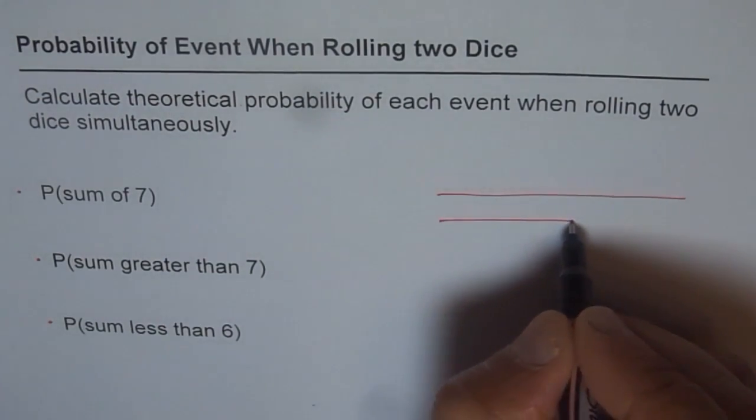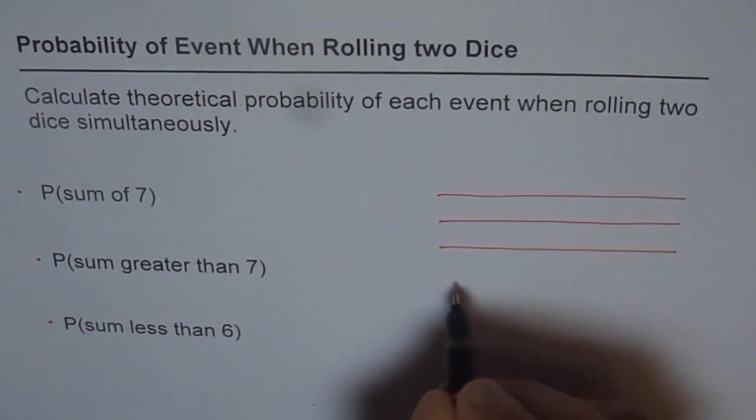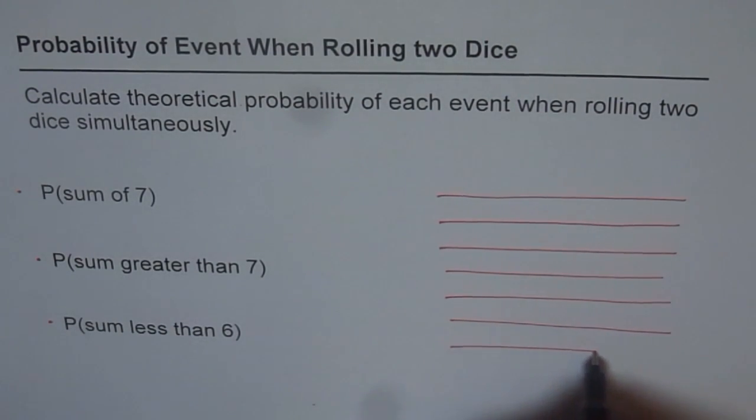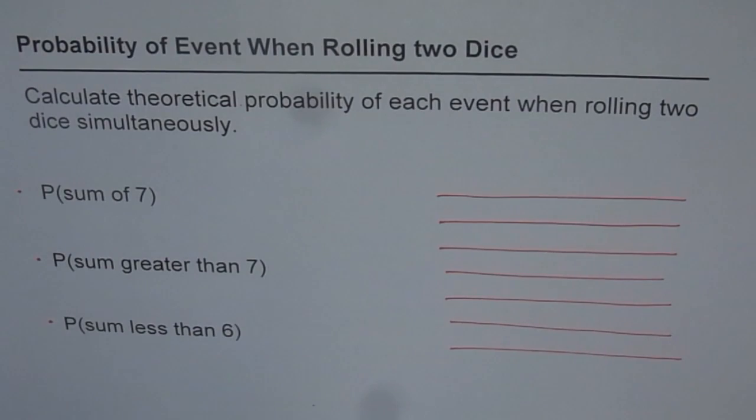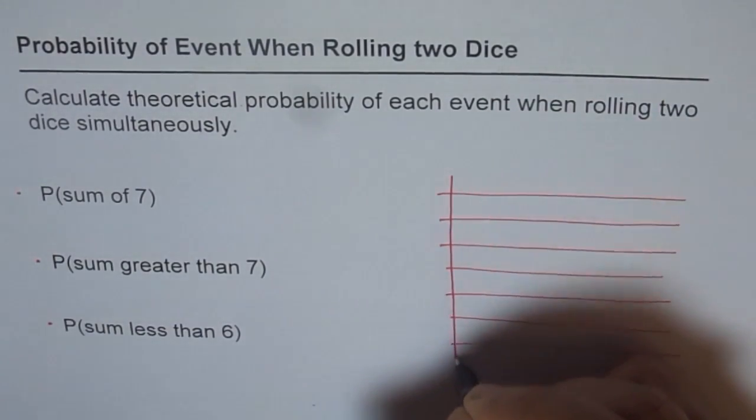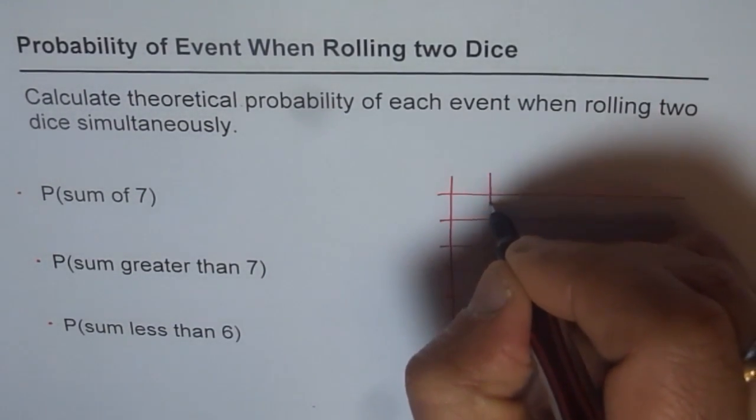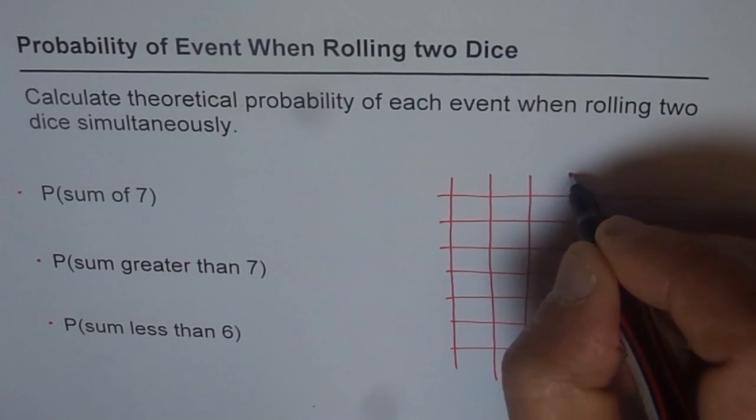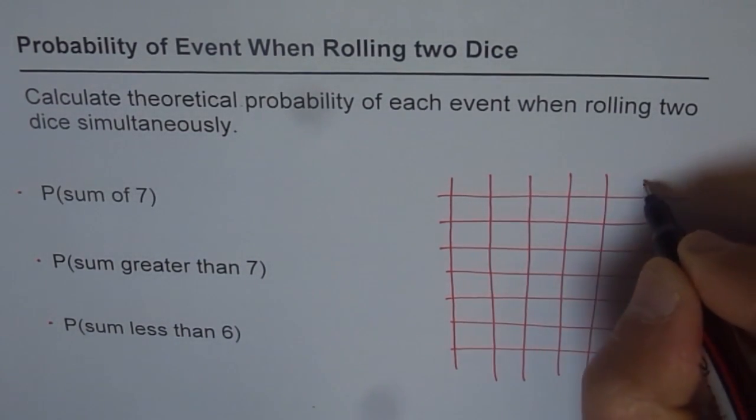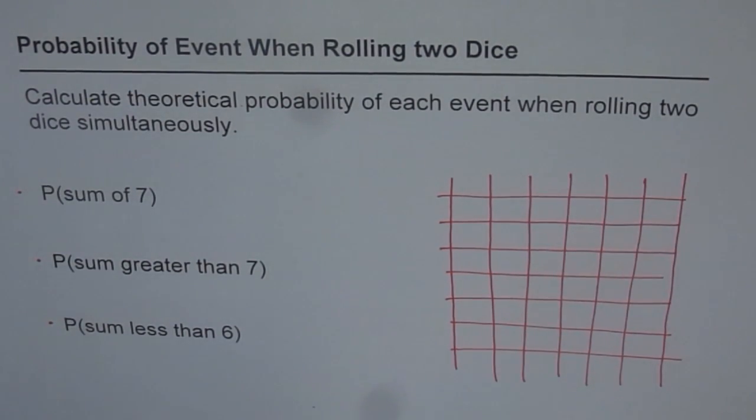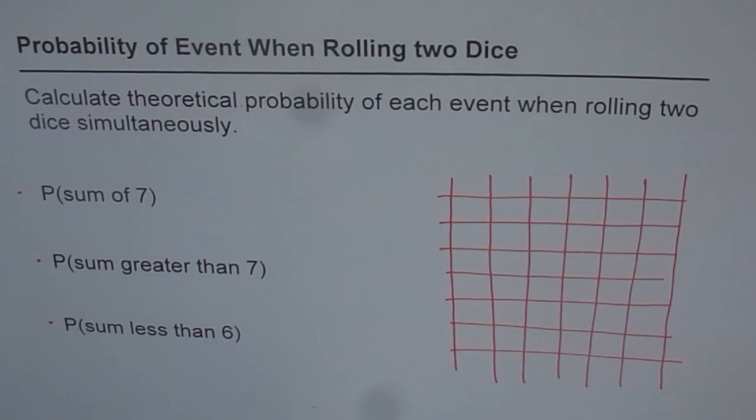So let's make six rows: one, two, three, four, five, six. And then we'll make six columns: one, two, three, four, five, six. So we've got six rows and six columns here. We'll fill in all the options.